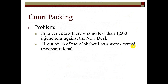The problem was that in the lower courts there were no less than 1,600 injunctions against the New Deal — meaning the court says you have to stop what you're doing. The federal courts were filled with conservative justices because before Roosevelt it was pretty much Republican presidents all the way back to Wilson.